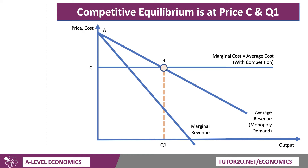So here's a market with a downsloping demand curve, and I'm assuming here constant cost — so you have to tell the examiner you're dropping the assumption of diminishing returns. You're just assuming the cost of supply is the same; the marginal and the average cost is the same. And a competitive market would be at point B, output Q1, price C, because that's where supply meets demand in the market.